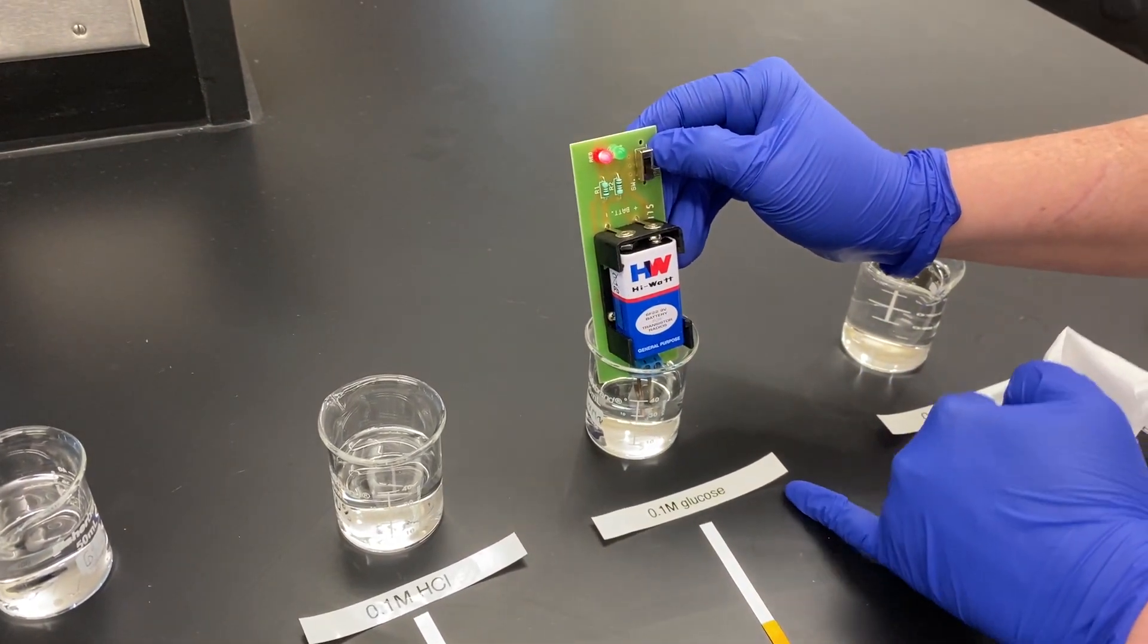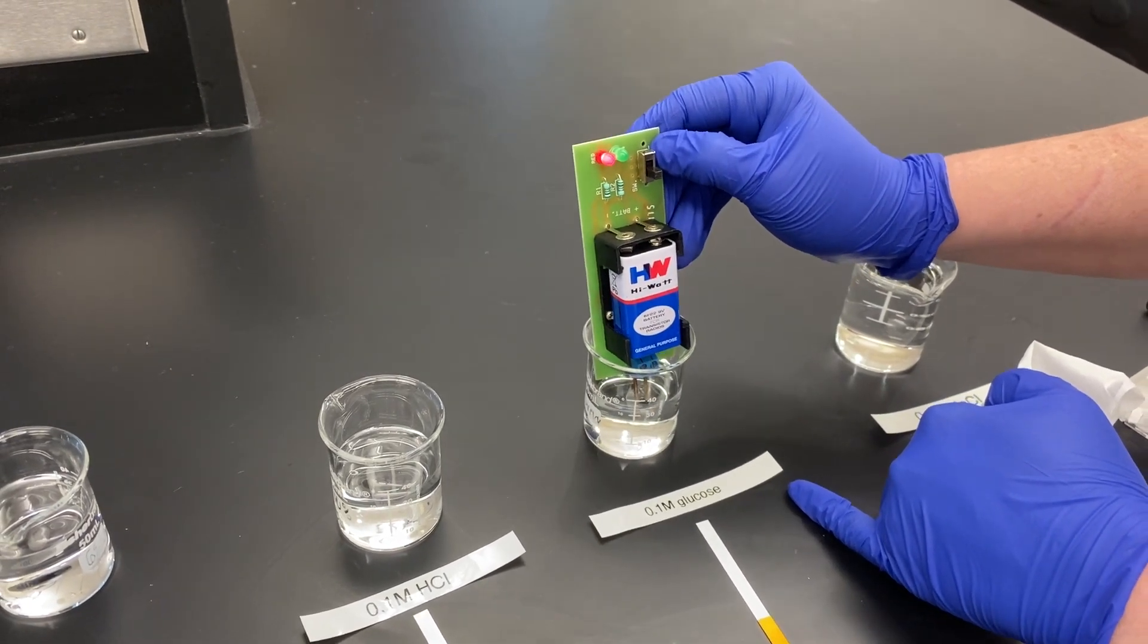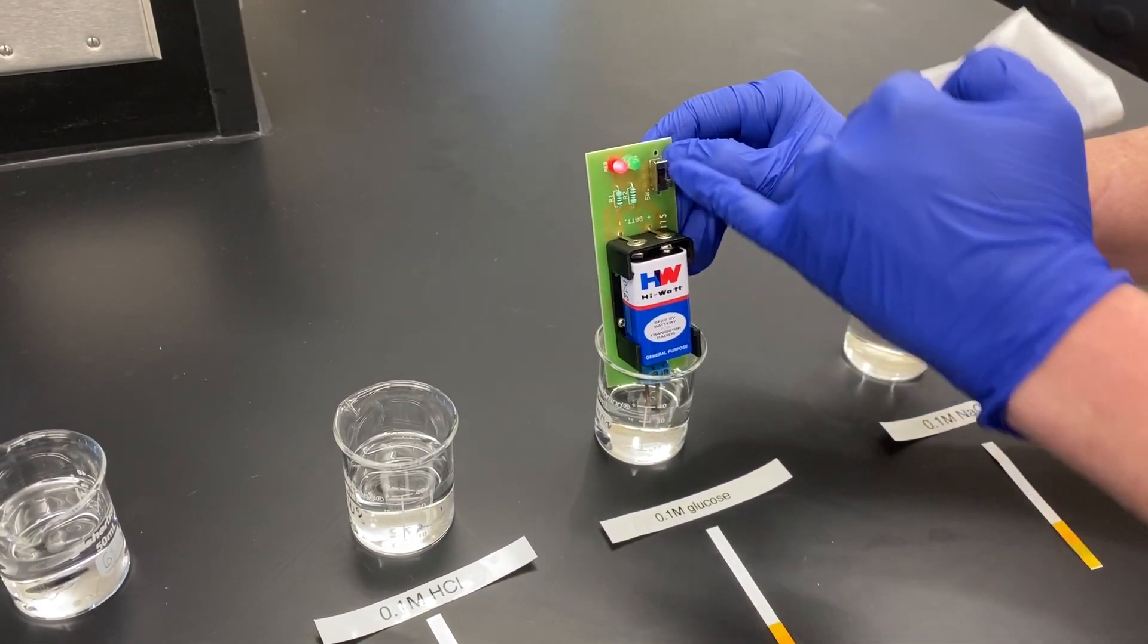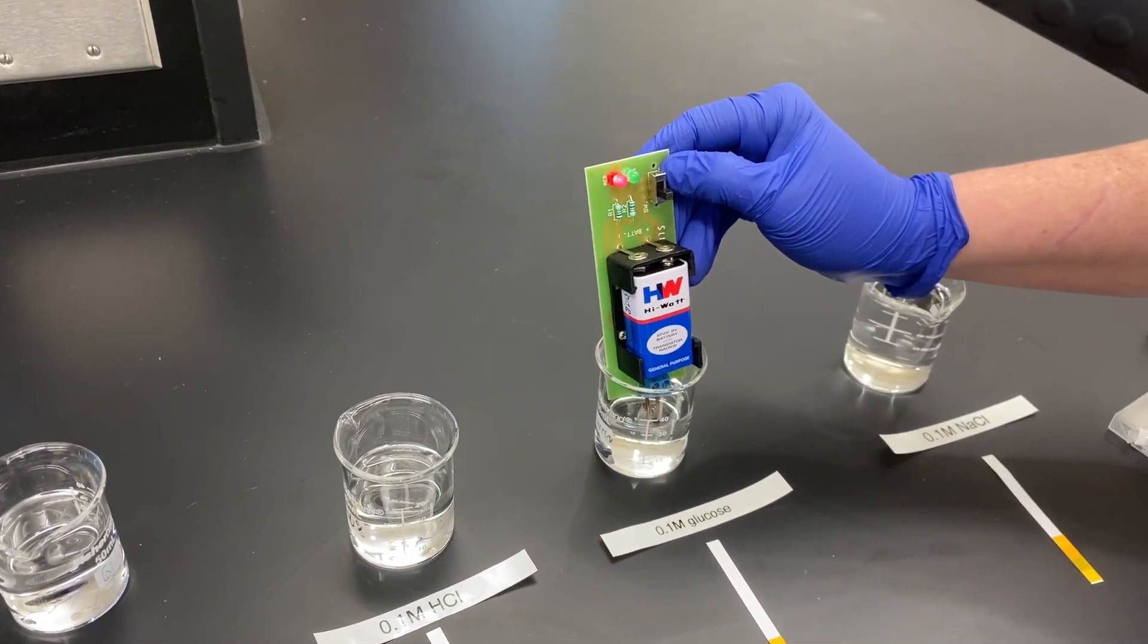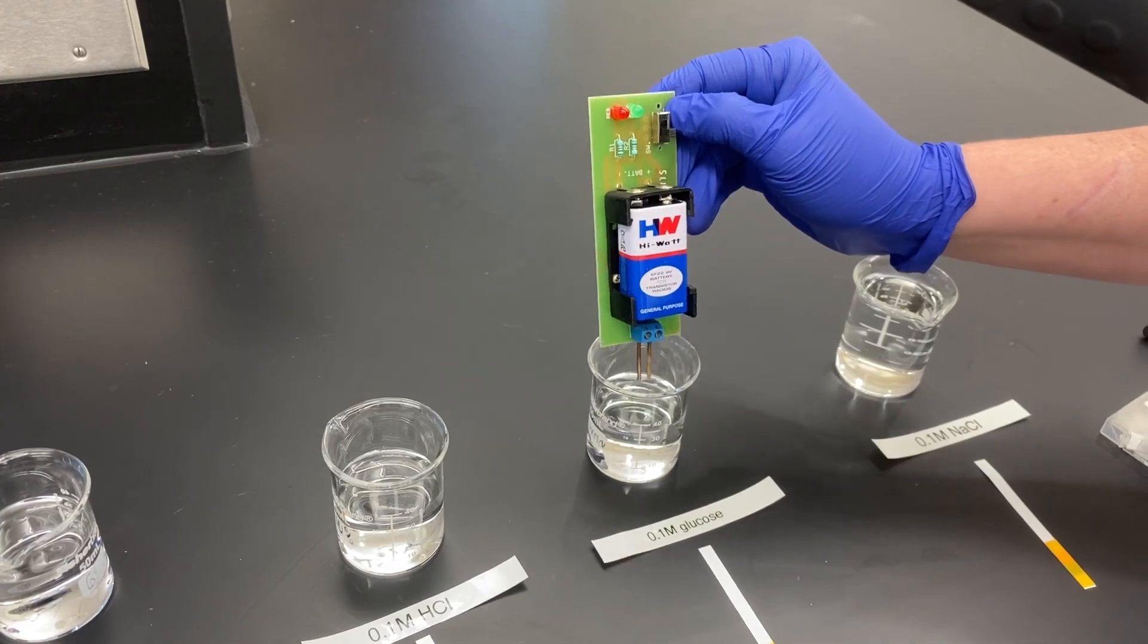Glucose itself is not conductive - it does not ionize. But what we're seeing, that faint conductivity, is because glucose is dissolved in the DI water that had faint conductivity.